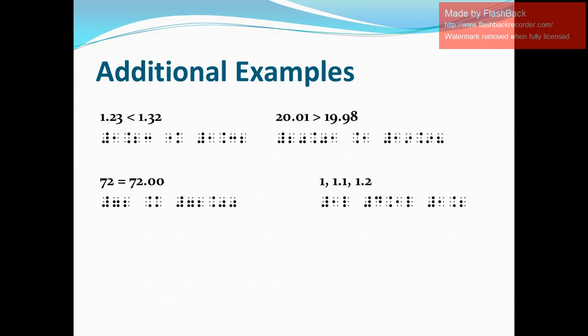Our third example: 72 is equal to 72.00. In Nemeth, we write the numeric indicator, digits 7 and 2, space, the equal sign in Nemeth (dots 4 and 6 in the first cell, dots 1 and 3 in the second cell), then space, numeric indicator, digits 7 and 2, decimal point, and then digits 0 and 0.